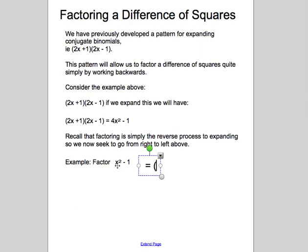And what we'll see is we'll have a conjugate pair. We take the square root of the first, x. We take the square root of the second, 1. We use 1 with the subtraction sign for the conjugate, and the other for the multiplication sign. And then we're finished.